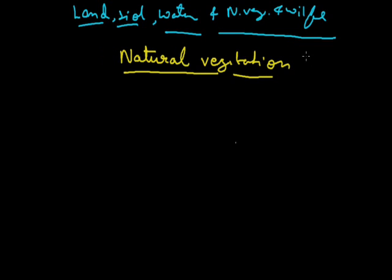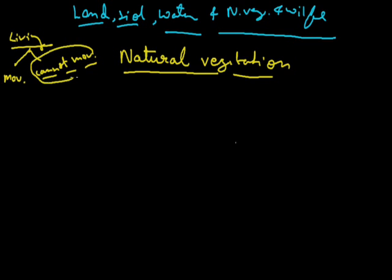Natural vegetation - if we see natural vegetation and wildlife, then living things are of two types. First is the movable living things which can move from one place to another, and second which cannot move. The movable things are like all the animals, birds, fishes - they can move from one place to another. All the plants, trees cannot move from one place to another. Those living things which cannot move from one place to another are known as natural vegetation - means trees and plants.